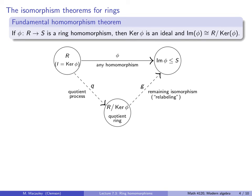Now it's time for the isomorphism theorems for rings. First is the fundamental homomorphism theorem, frequently called the first isomorphism theorem. This says: if φ is a ring homomorphism from R to S, then the kernel of φ is a two-sided ideal of R, and the image of φ is a subring of S isomorphic to R mod the kernel. Here's the same picture used for groups: the domain is R, we have a homomorphism φ to S, the image of φ is a subring of S, and the kernel of φ is an ideal.